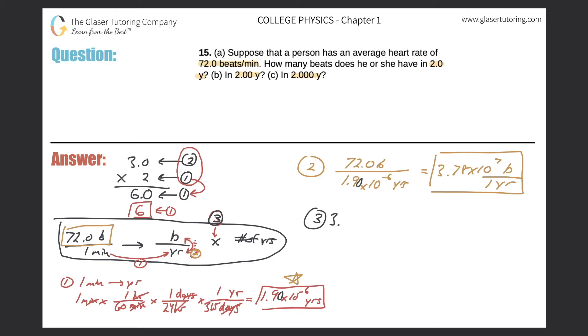Now let's take the beats per year, which is 3.78 times 10 to the 7 beats per one year, and now let's multiply that by, for part a, 2.0 years. Notice the years will cancel, and that will leave me with beats. Not the headphones, but the beats of a heart. So all I have to do now is multiply it together.